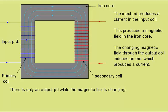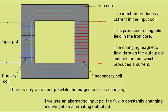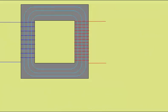There is only an output potential difference while the magnetic flux through the secondary coil is changing. If we use an alternating input potential difference, the flux will be constantly changing and we'll get an alternating output potential difference. So we apply an AC as the input and we get an AC as the output. Transformers will only work with AC.